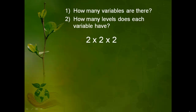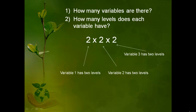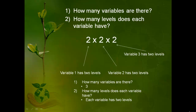Here's another one — figure out how many variables there are and how many levels each variable has. Unpause the video when you think you have the answer. So the first variable has two levels, the second variable has two levels, and the last variable has three levels. So there are three variables in the study, and each variable has two levels.